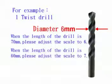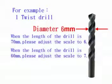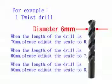When the length of drill is 60 mm, please adjust the scale to 7. When the length of drill is 50 mm, please adjust the scale to 8, and so on and so forth. Note the inverse relationship between the length and the thickness of the drill bit.